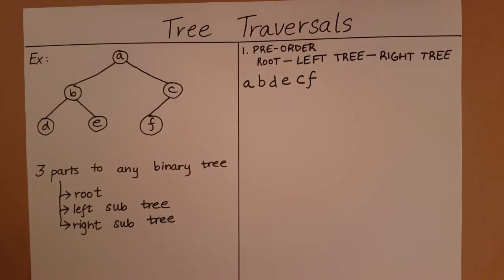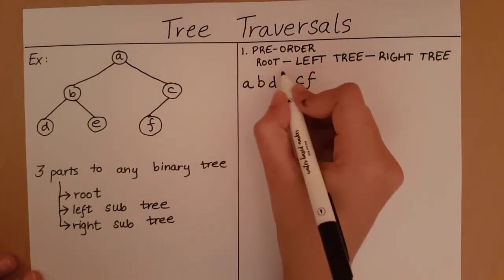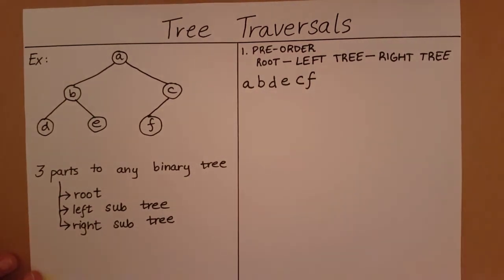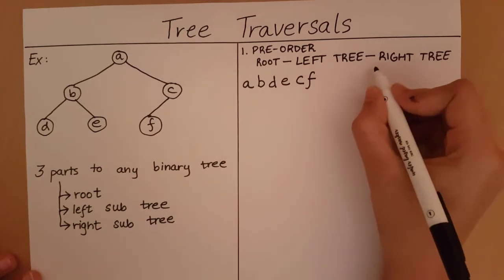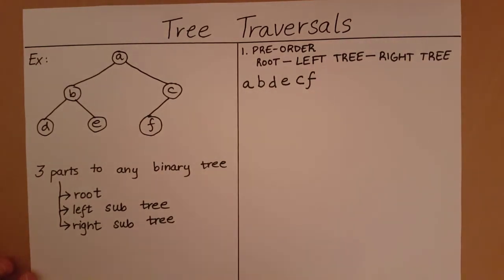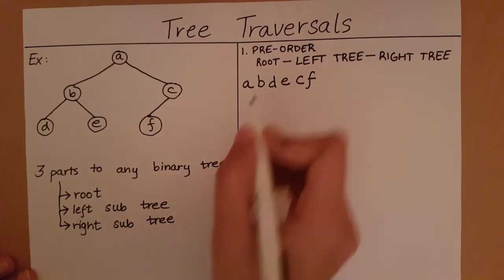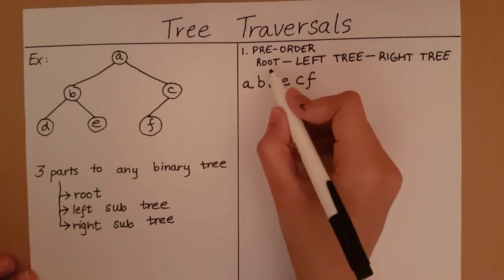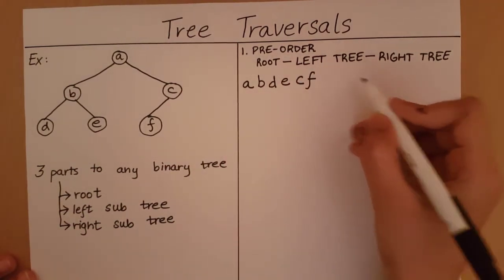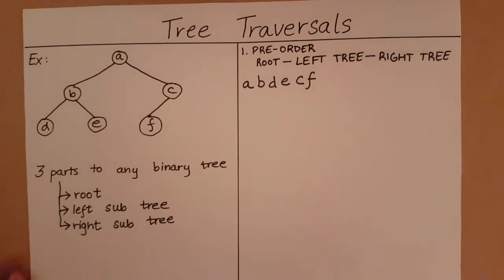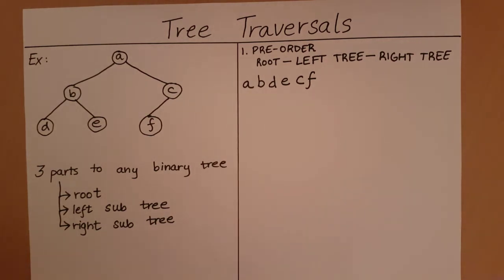This is how preorder is going to work. Once I have given the root, all elements of its left subtree in preorder, and all elements of its right subtree in preorder, I can say that the preorder traversal of that tree at this particular root has been completely traversed.